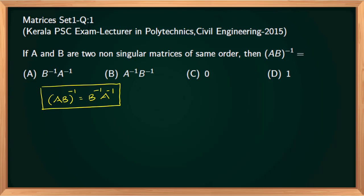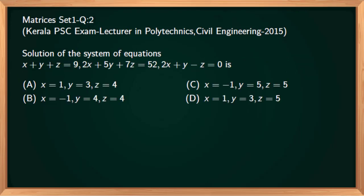The correct option is option A. Next question: find the solution of the system of equations x plus y plus z equal to 9, 2x plus 5y plus 7z equal to 52, 2x plus y minus z equal to 0. Options are: A) x=1, y=3, z=4; B) x=−1, y=4, z=4; C) x=−1, y=5, z=5; D) x=1, y=3, z=5. Options A and D both have x=1.